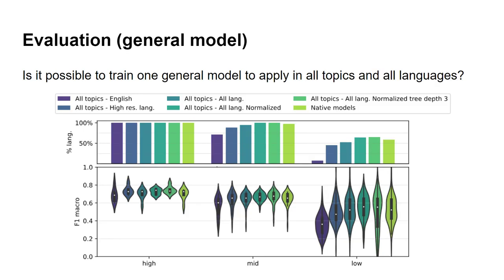To mitigate the effect of low resources on other languages, we train the model using the information of all languages together. By doing this, the percentage of languages for which the model performs better than a random classifier improves by a lot. This tells us that a general model is possible and can be applied to tell an interesting story even for low-resource languages.